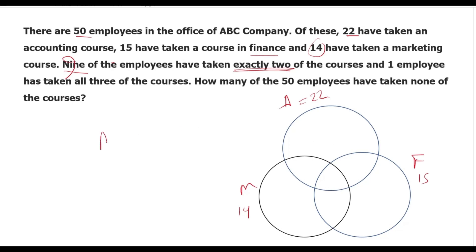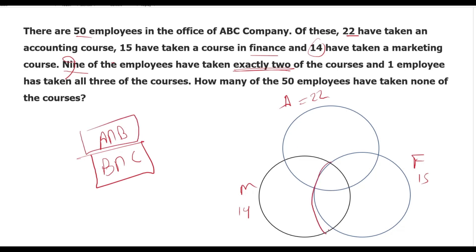Now, exactly two means A intersection B, B intersection C. In this case, exactly two. Now exactly three — in this case there are three: A, M, R.